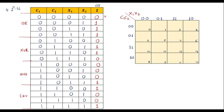In the K-map, cell 0000 is equivalent to decimal 0, followed by cells 1 through 15. So the cells are labeled 0, 1, 2, 3, 4, 5, 6, 7, 8, 9, 10, 11, 12, 13, 14, 15.